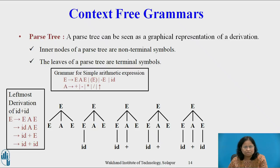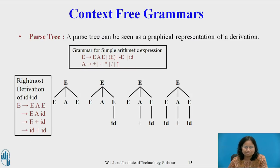Parse tree. A parse tree can be seen as a graphical representation of a derivation. Inner nodes of a parse tree are non-terminal symbols, while the leaves are terminal symbols. The leftmost derivation and the parse tree of the string id+id is given here. The rightmost derivation and the parse tree of the same string id+id using the grammar for simple arithmetic expression is also given here.